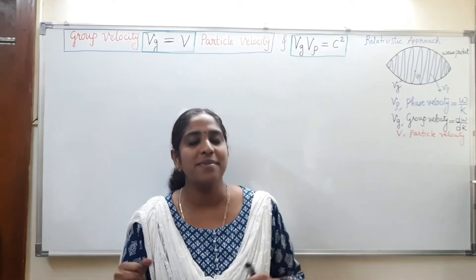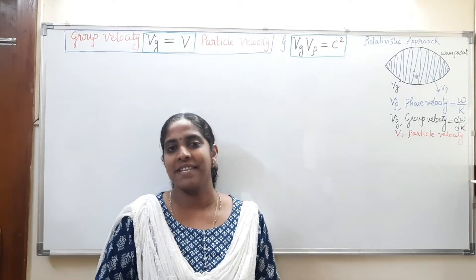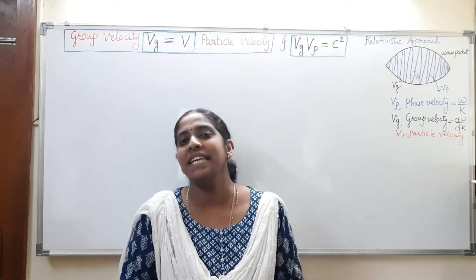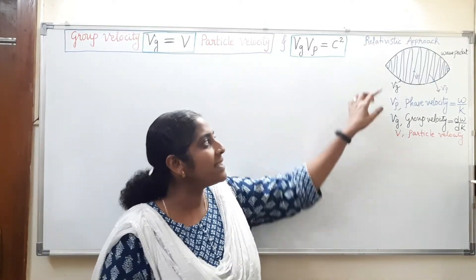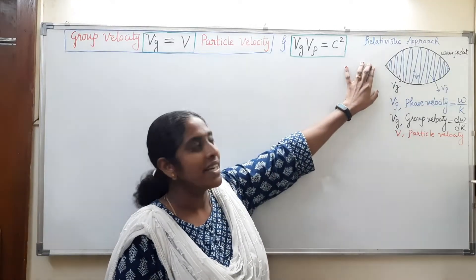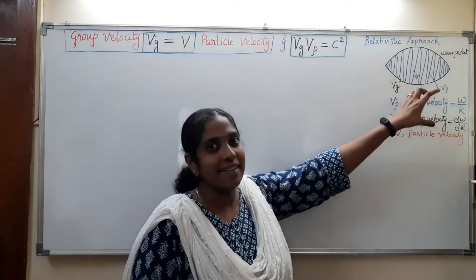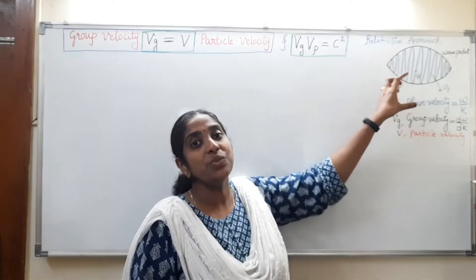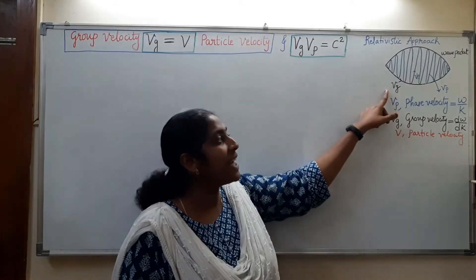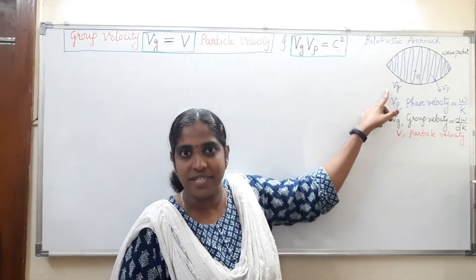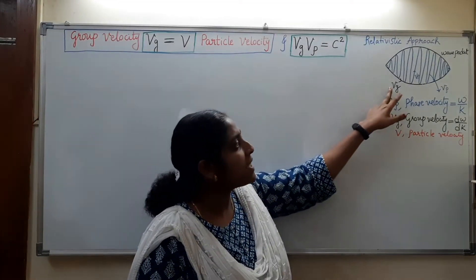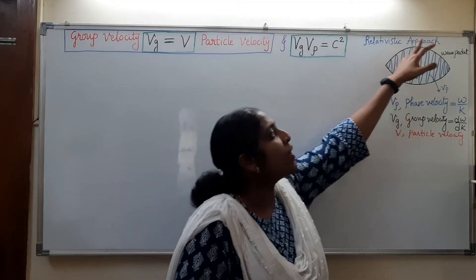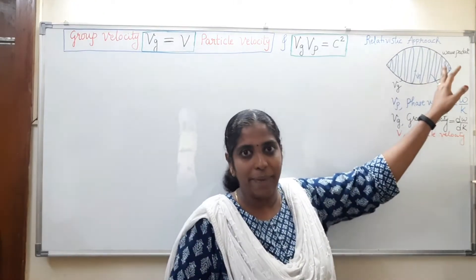So when a group of waves of slightly different frequencies move together, they produce a resultant pattern known as the wave packet. The envelope of this wave packet — that is, the group of waves moving together — moves with a velocity known as the group velocity. Here the group velocity is denoted in black ink, representing the velocity of the envelope of this wave packet.